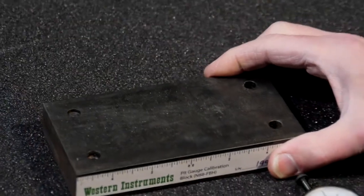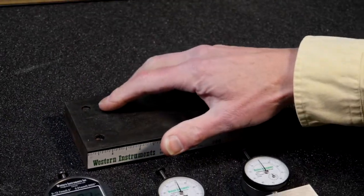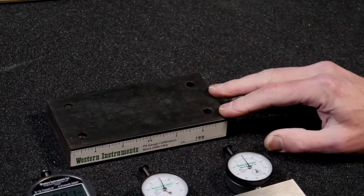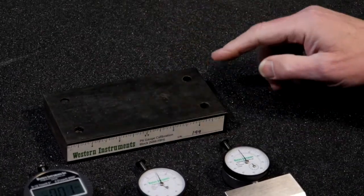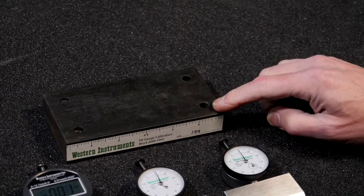We'll take our calibration block, which has flat bottom holes in each corner: a hundredth of, two hundredth of, three hundredth of, and four hundredth of.